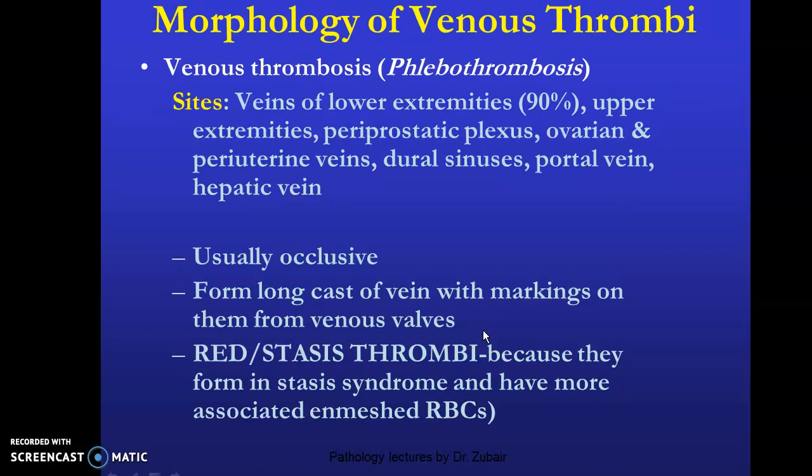Morphology of venous thrombi — also called venous thrombosis or phlebothrombosis. Ninety percent occur in veins of the lower extremity; others occur in the upper extremity, periprostatic plexuses, ovarian and periuterine veins, dural sinuses, portal vein, and hepatic vein. They are usually occlusive, forming a long cast of the vein. They are called red or stasis thrombi because they form in stasis conditions such as prolonged immobilization — for example, during long aeroplane journeys, which can lead to deep vein thrombosis.